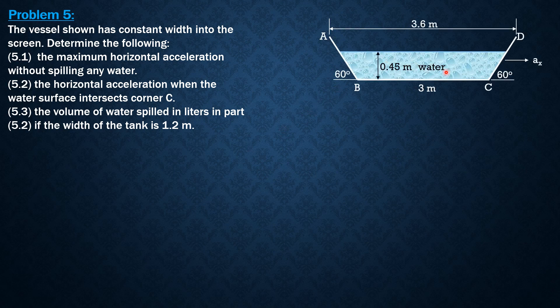So this is the figure. Let's analyze here. Let's fill in and label some important dimensions so we can analyze the situation. We have 60 degrees, so this is an isosceles trapezoidal tank. Let's form a triangle here. Therefore this length is 3.6 minus 3 is 0.6 divided by 2, so each is 0.3 meter.